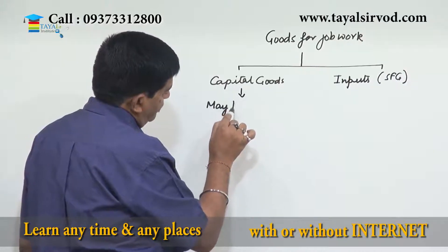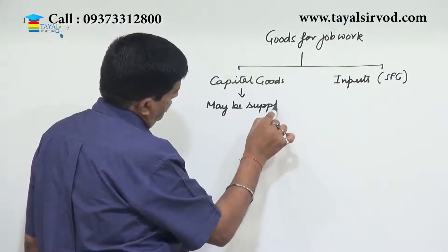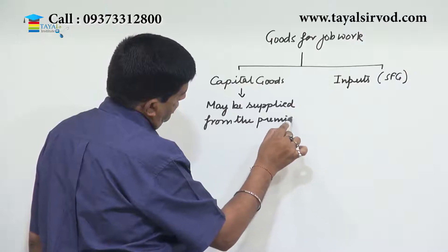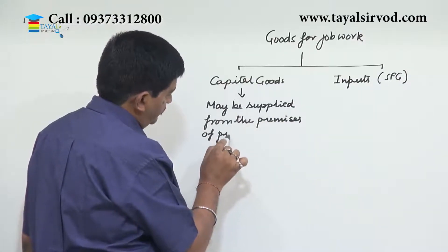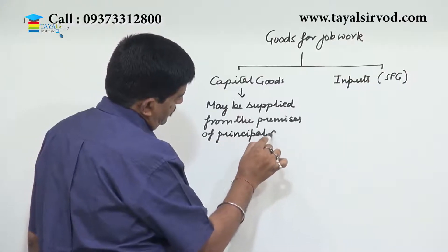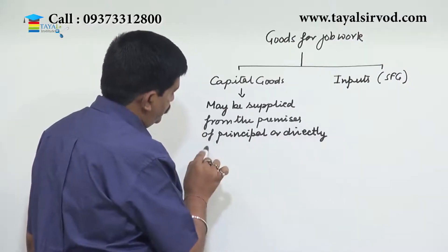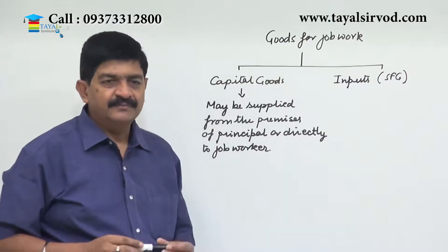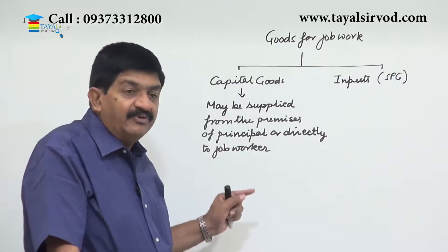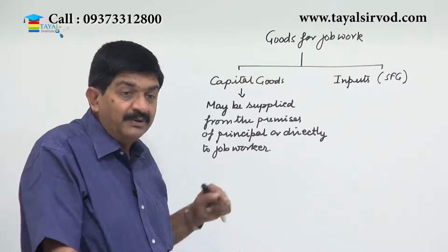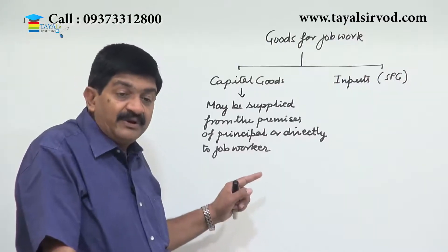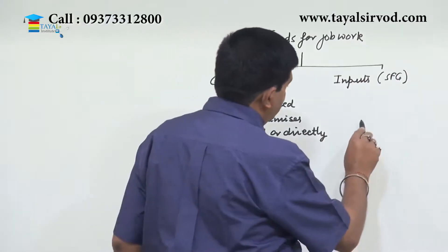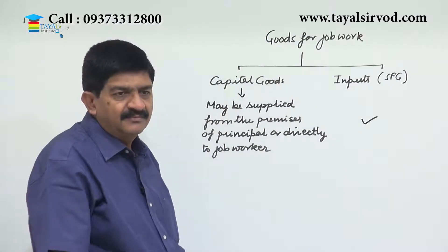Capital goods or inputs may be supplied from the premises of the principal, or directly to the job worker. If the goods required for job work are already in the premises of the principal then those can be supplied from there; otherwise the principal can send these goods directly to the job worker. The same rule applies to both capital goods and inputs.